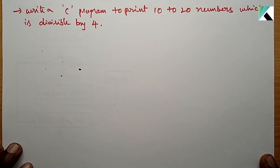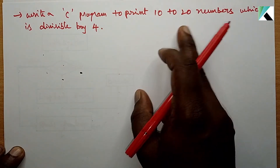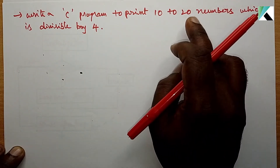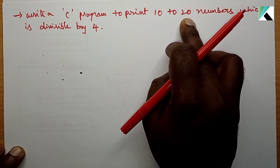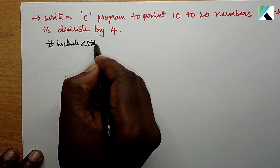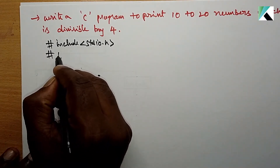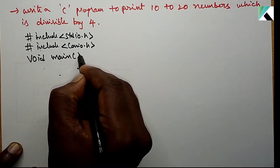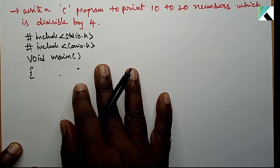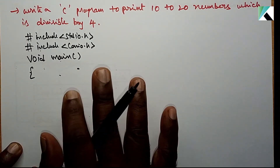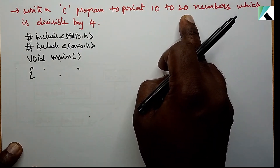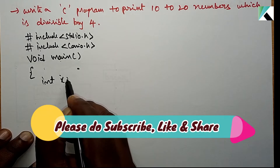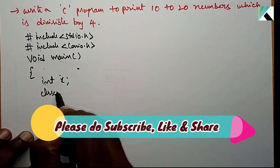Before going to that, this program is to print numbers from 10 to 20 which are divisible by 4. We include stdio.h and conio.h. The main program execution starts from main. The first part is variable declaration — how many variables are required. I will print 10 to 20 numbers, so one variable is needed: int x. Then clrscr to clear the screen.